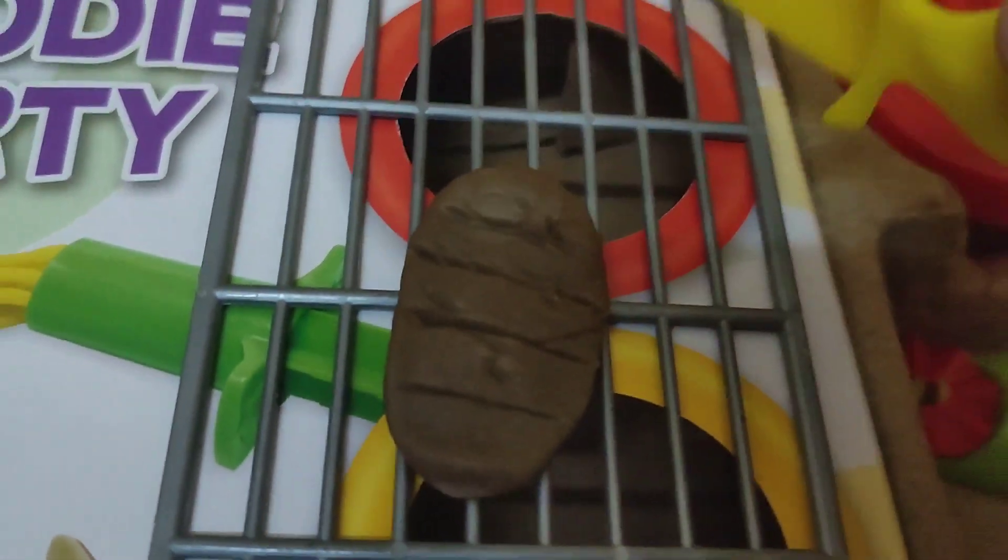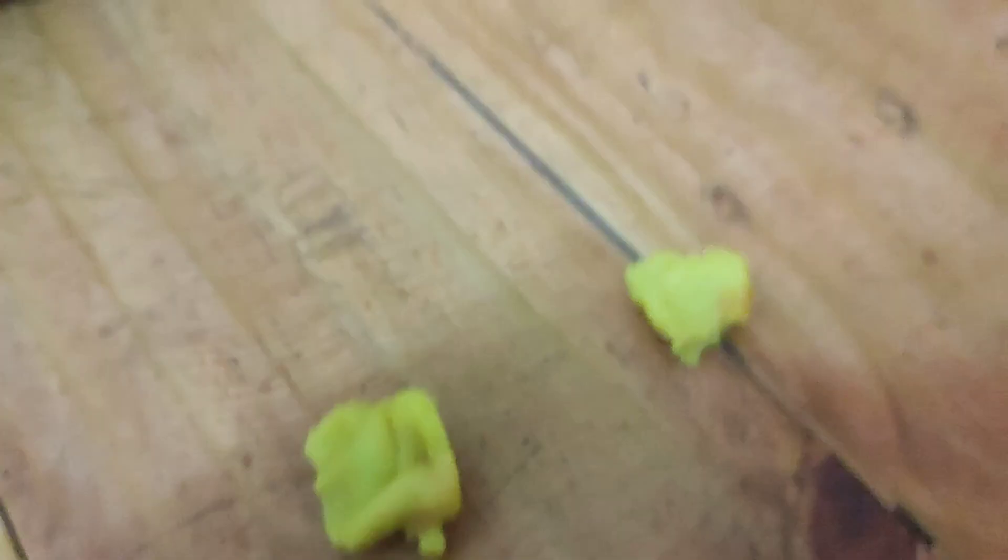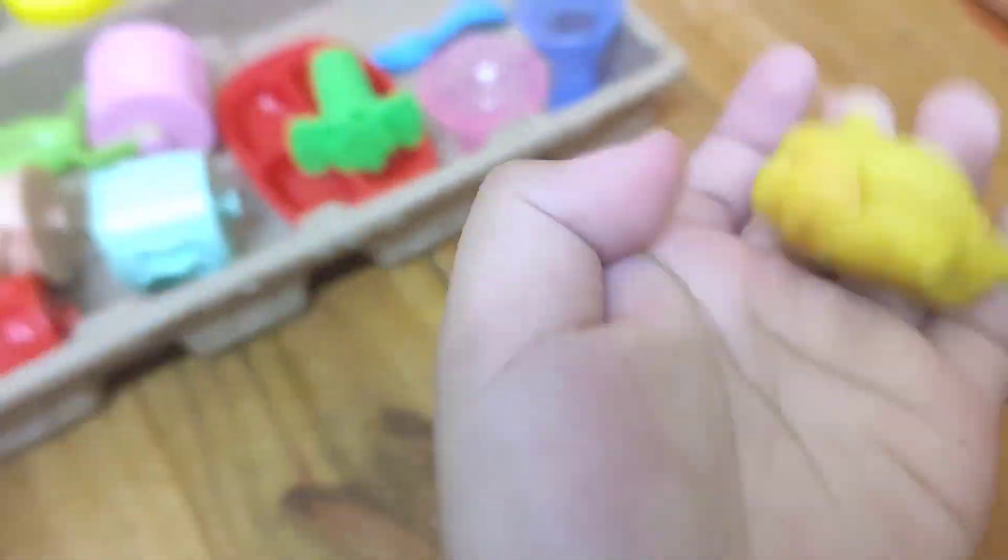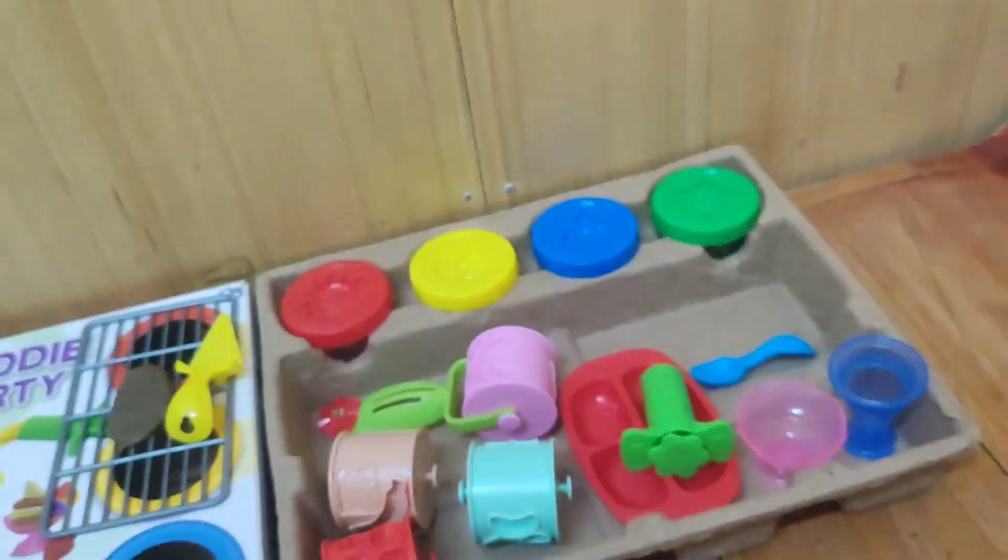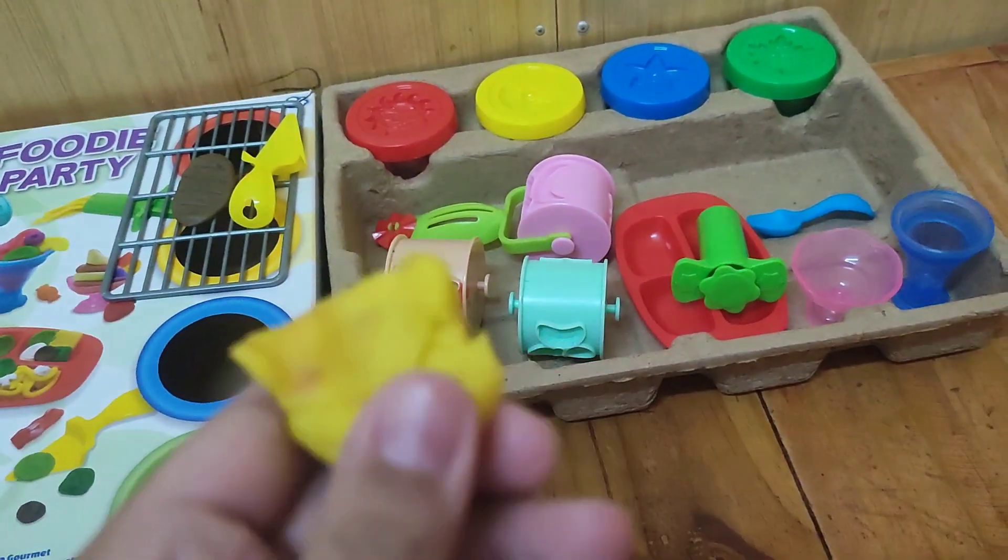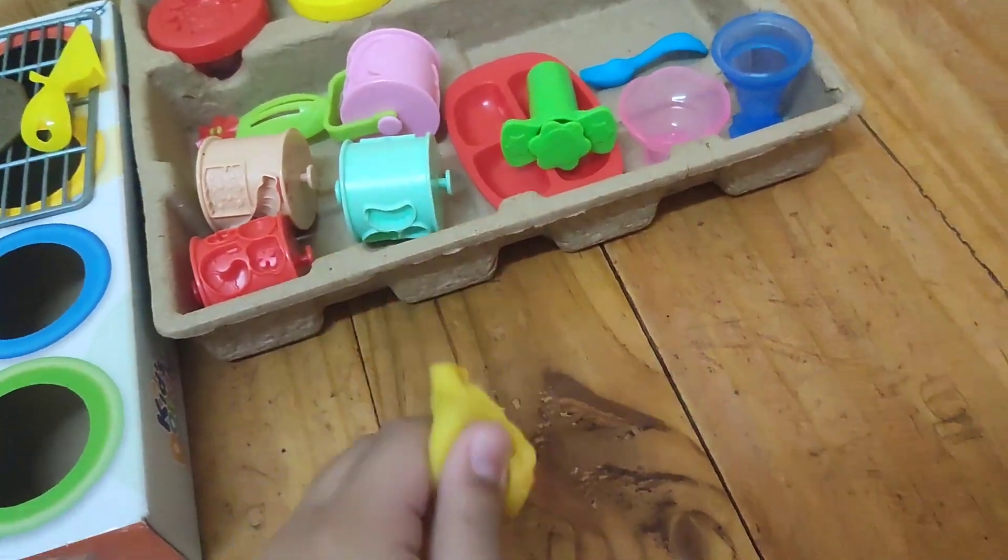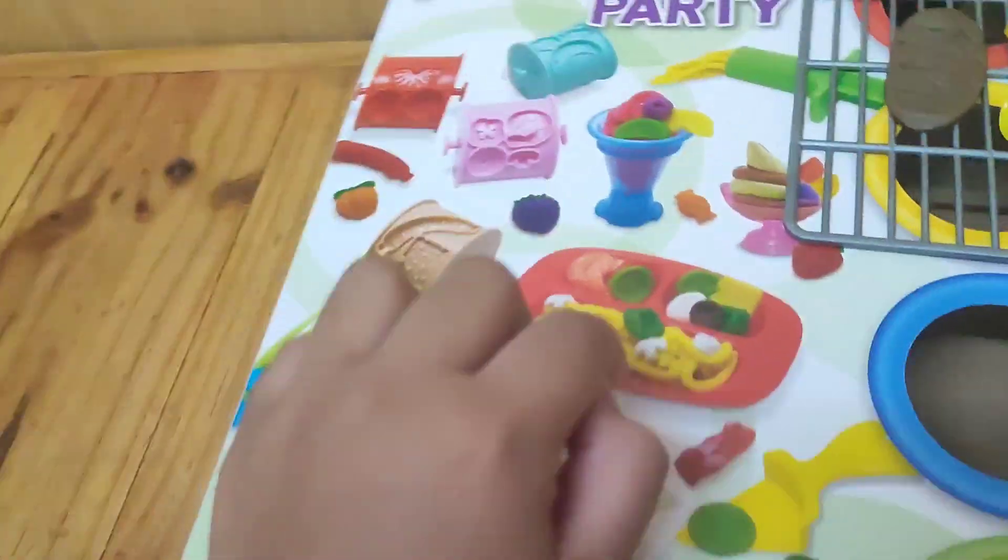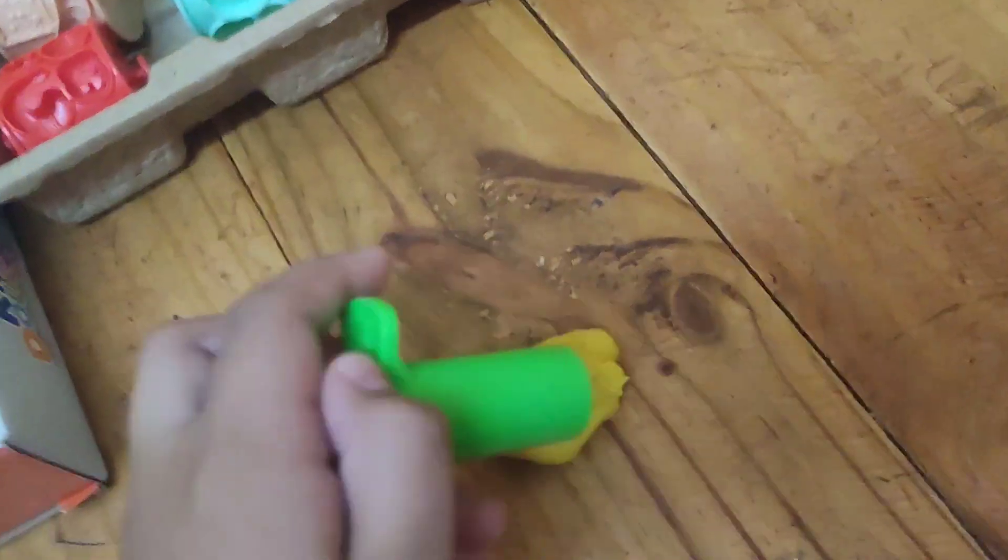So while we do that, let's make spaghetti. Let's get the yellow out again and take some yellow. So there we have some yellow here. Now I put some of the brown back to the yellow. So yeah, let's make spaghetti. We're going to use this tool. It's just like, you know, scared. I forget what's the name of it.